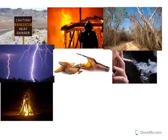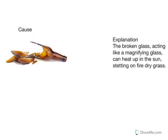So I'm going to give you an example. So I've picked a broken glass. So in the cause box, you just write down broken glass. But in the explanation box, you need to explain how this creates a fire.